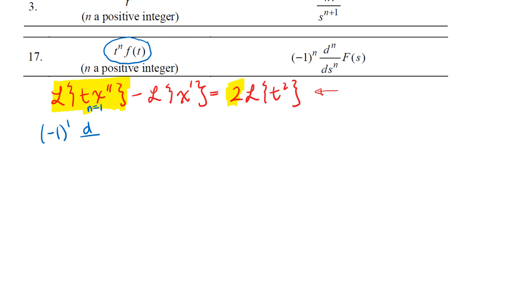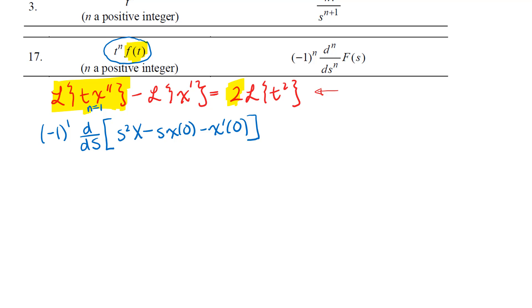I'm not going to write the 1 for that first order derivative. That is a derivative of F of s, where F of s represents the Laplace transform of that function f of t. So in this case, what I'm going to be taking the derivative with respect to s of is the Laplace transform of x double prime. In the brackets, I've written the Laplace transform of x double prime. The new part for this problem is essentially dealing with what I've just written down. I'm going to go ahead and apply the Laplace transform to the rest of the equation.